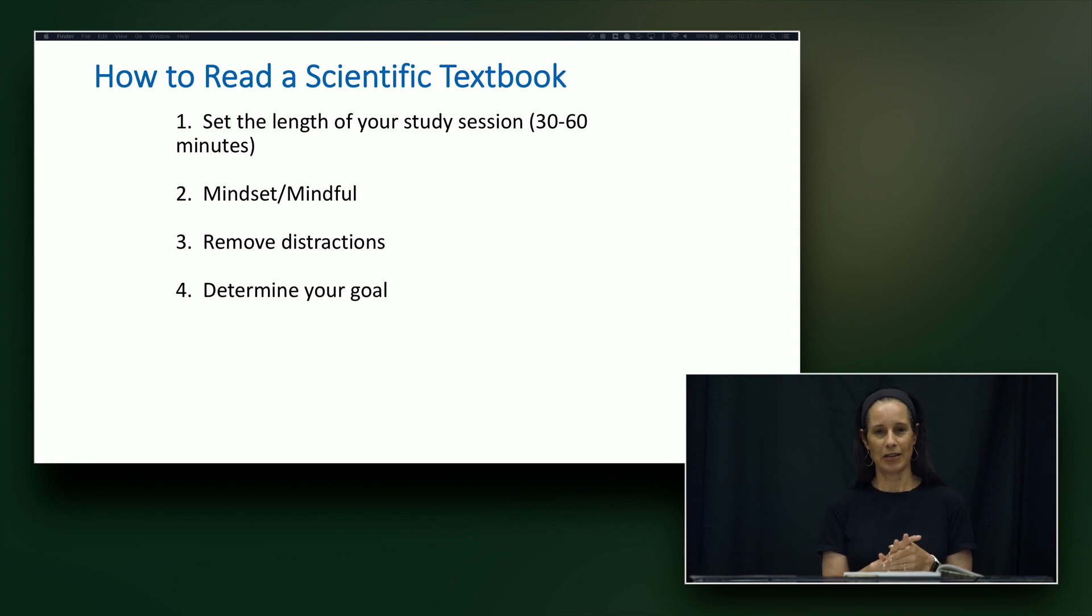The fourth step is to actually determine your goal. So I would recommend spending a minute or two determining what am I actually going to study in my textbook. I usually recommend picking just one section of your reading. So if for example you've been assigned three sections in your textbook, just pick one of those at a time and spend the 30 to 60 minutes focusing on that one section.